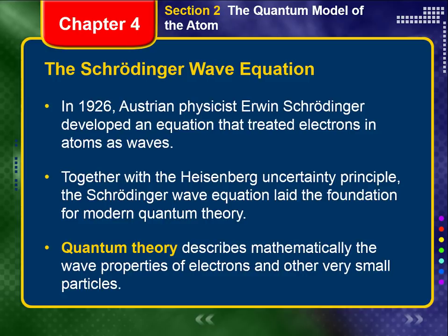So what is quantum theory? Quantum theory simply describes mathematically the wave properties of electrons and other very small particles. When we say very small, we're not talking about even the actual atom — the atom itself is not on this quantum level. Electrons are that small — about 1/1,800th the mass of a proton. They are so small that they do not behave according to traditional Newtonian physics. Hence, quantum theory steps in to try to describe how they behave.